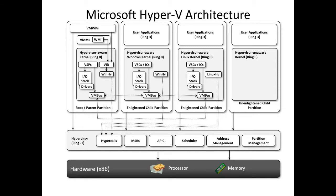Microsoft Hyper-V must have at least one parent or root partition running on Windows. The virtualization management stack runs in this parent partition and has direct access to the hardware device. The root partition or parent partition then creates multiple child partitions which host the guest operating system. A root partition creates child partitions using the hypercall application program interface, or hypercall API.